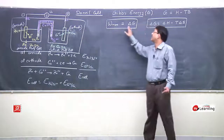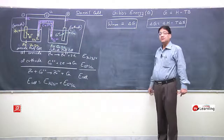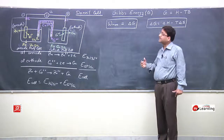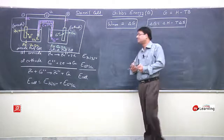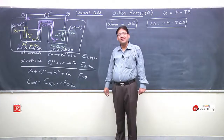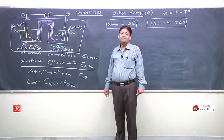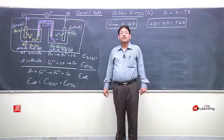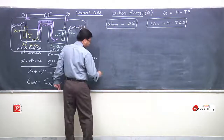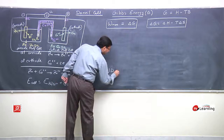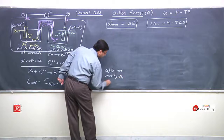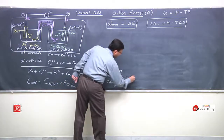During any process, the maximum work done is delta G. Now we apply this concept to a galvanic cell. Whenever any charge moves, the work done is charge multiplied by potential difference — work done on moving the charge is Q into V.